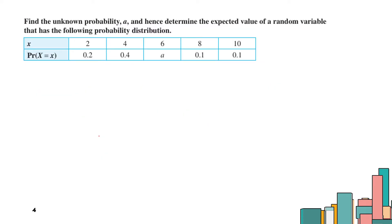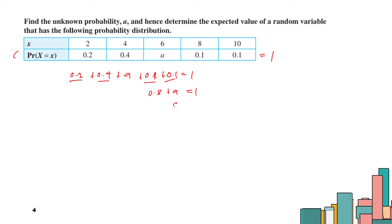Proceeding to the second example: find unknown probability a, and hence determine the expected value of the random variable with the following probability distribution. Take note that all probabilities must sum to 1. So 0.2 plus 0.4 plus a plus 0.1 plus 0.1 equals 1. Adding the known values: 0.2 plus 0.4 plus 0.1 plus 0.1 equals 0.8, so a equals 0.2.